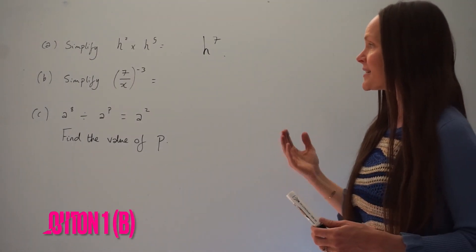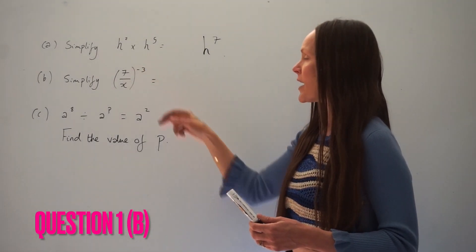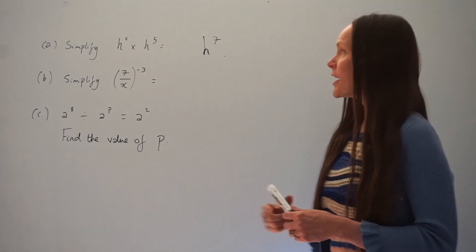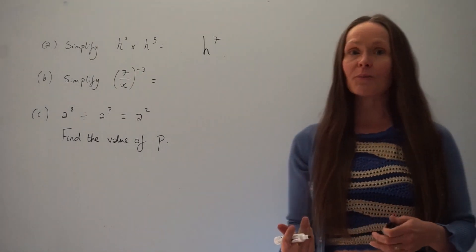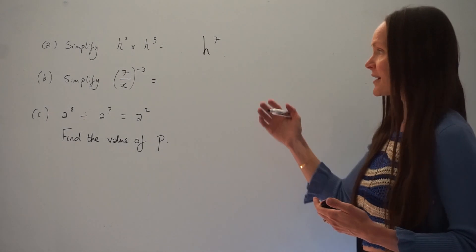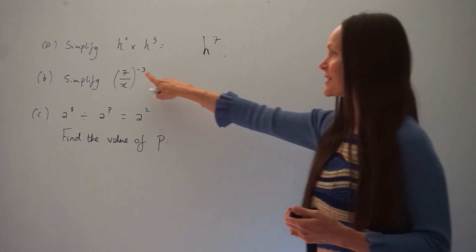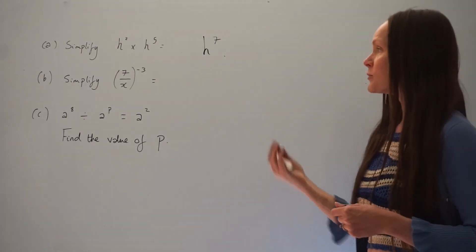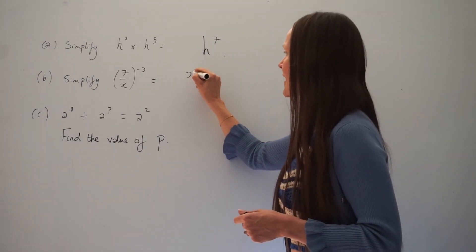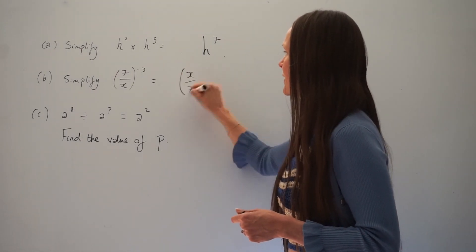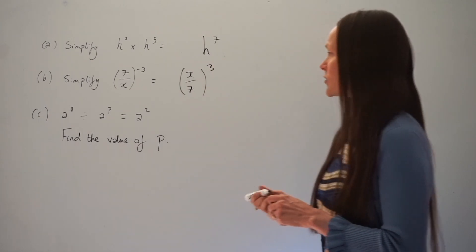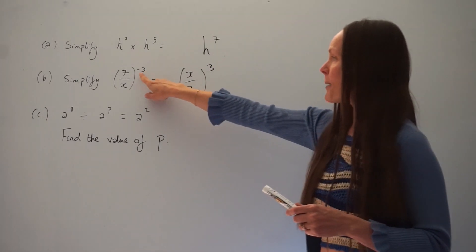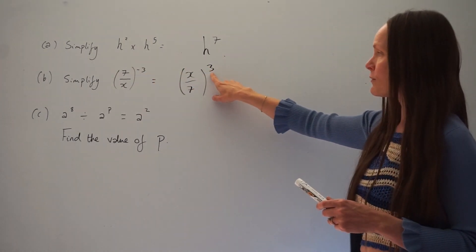Now on to part B — simplify 7 over x, all raised to the power of negative 3. Remember, when you have a negative power outside the brackets with a fraction, the negative sign switches the fraction upside down. So I'm going to rewrite the question as x over 7, now raised to the power of positive 3.